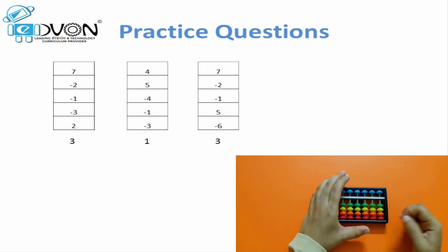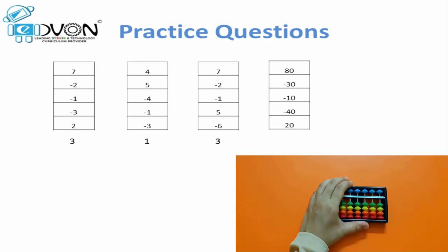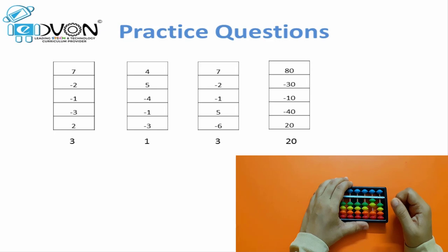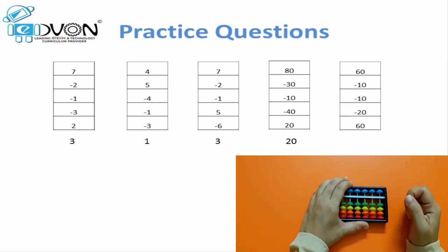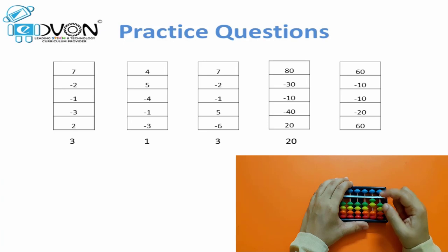Make your abacus 0. Next question is of tens, so we will do on the tens rod. Ready? 80, minus 30, minus 10, minus 40, plus 20. Answer: 20. Next question: 60, minus 10, minus 10, minus 20, plus 60. Answer: 80.